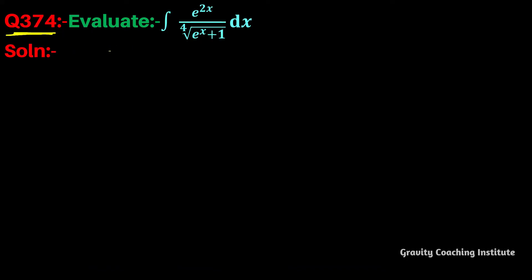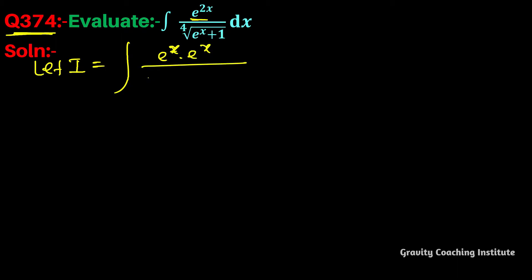Question number 374: evaluate integration of e to the power 2x upon fourth root of (e to the power x plus 1) dx. Let I equal to integration of e to the power 2x, which we rewrite as e to the power x into e to the power x, upon fourth root of (e to the power x plus 1) dx.